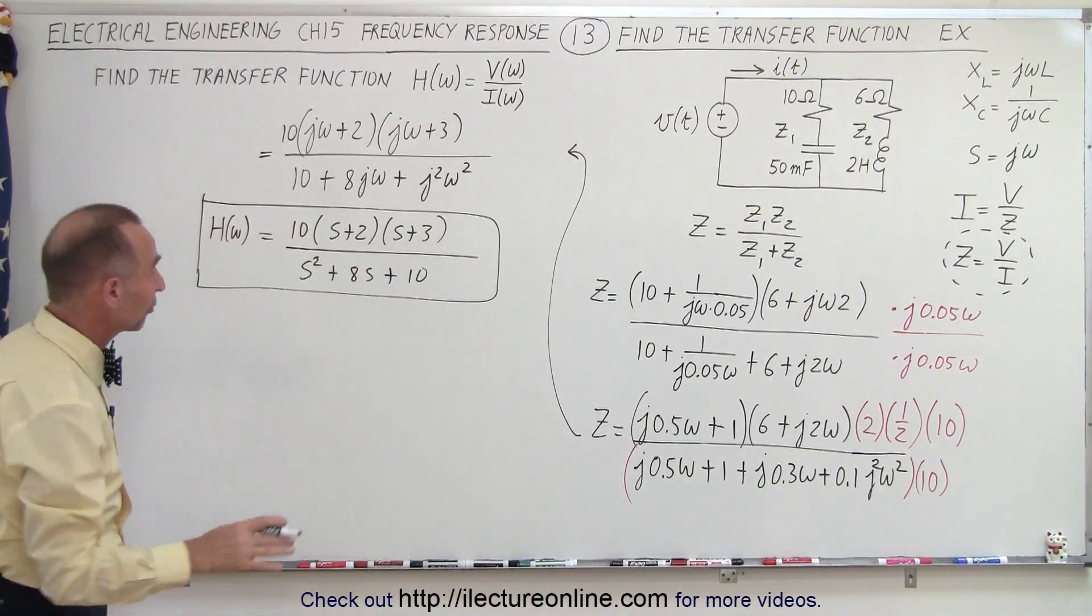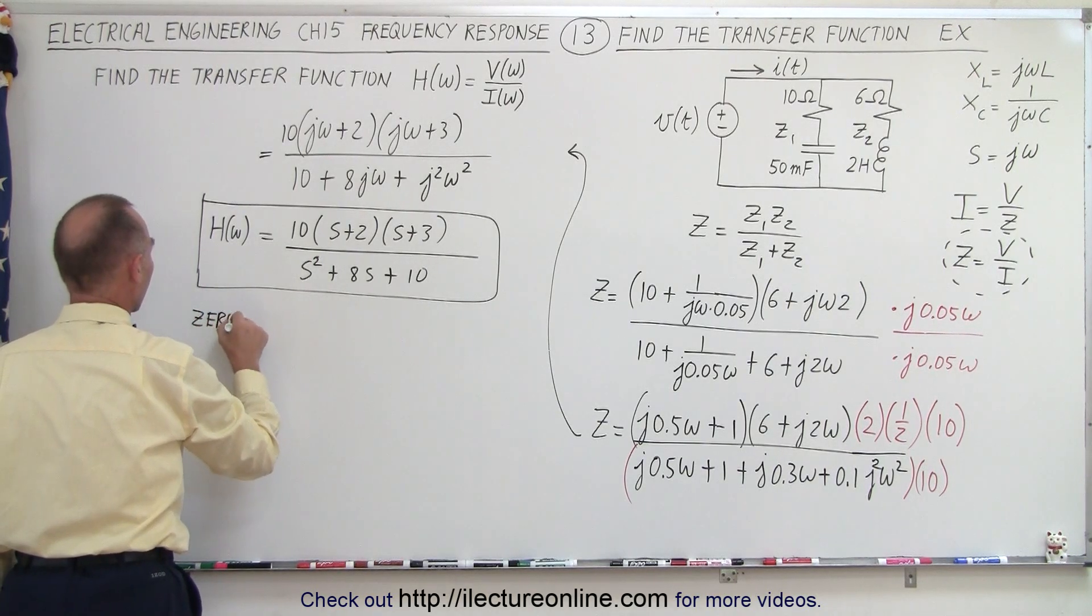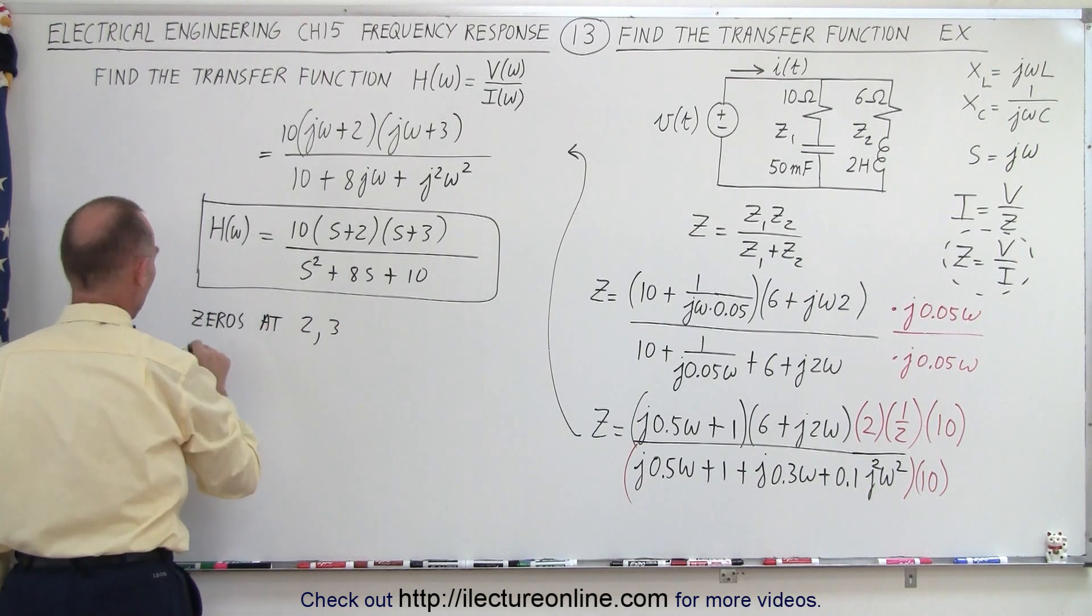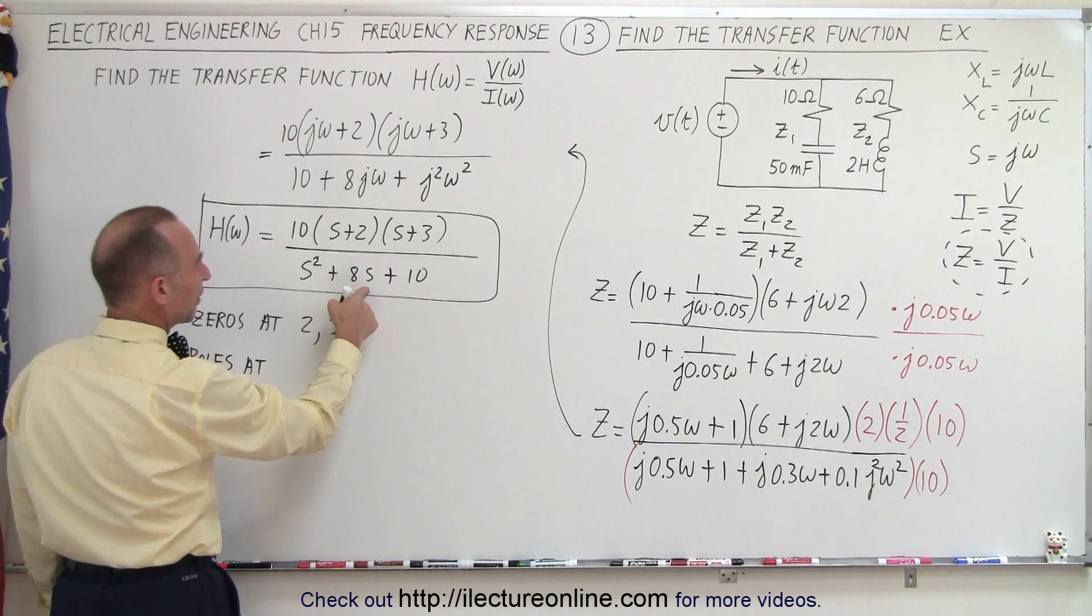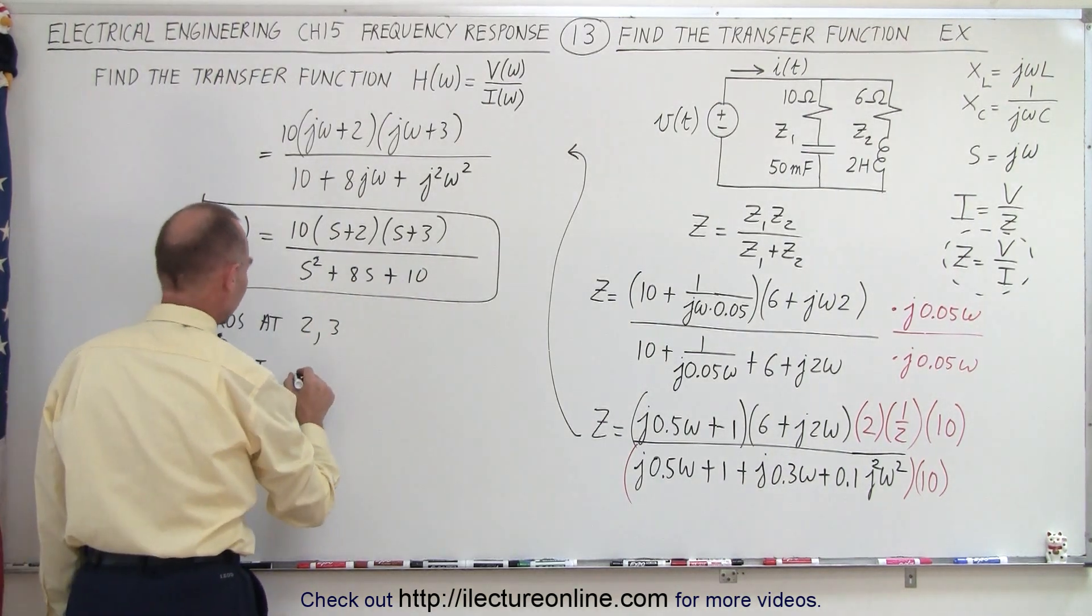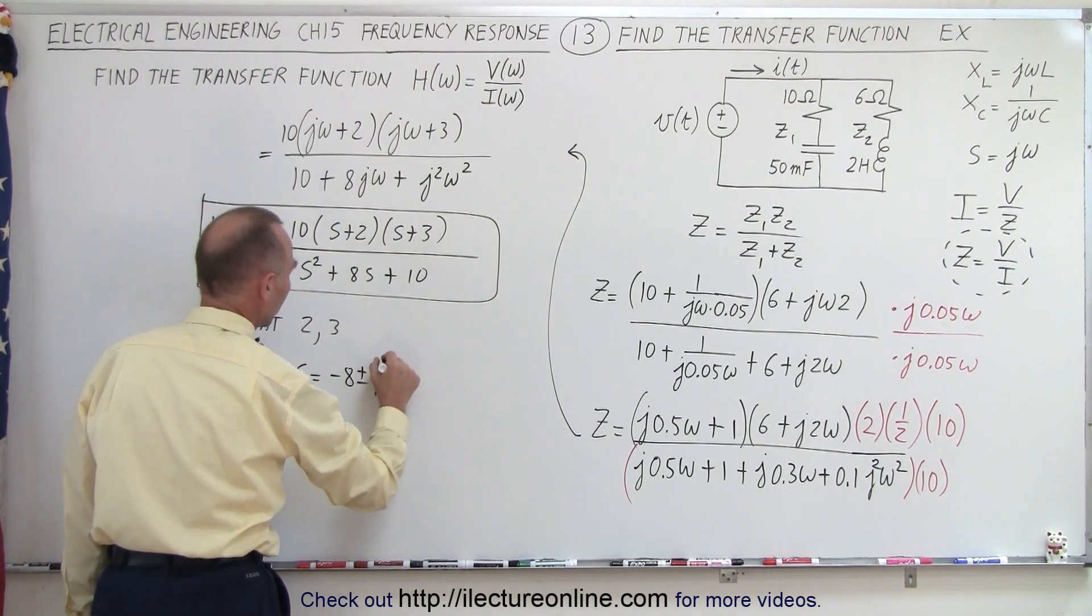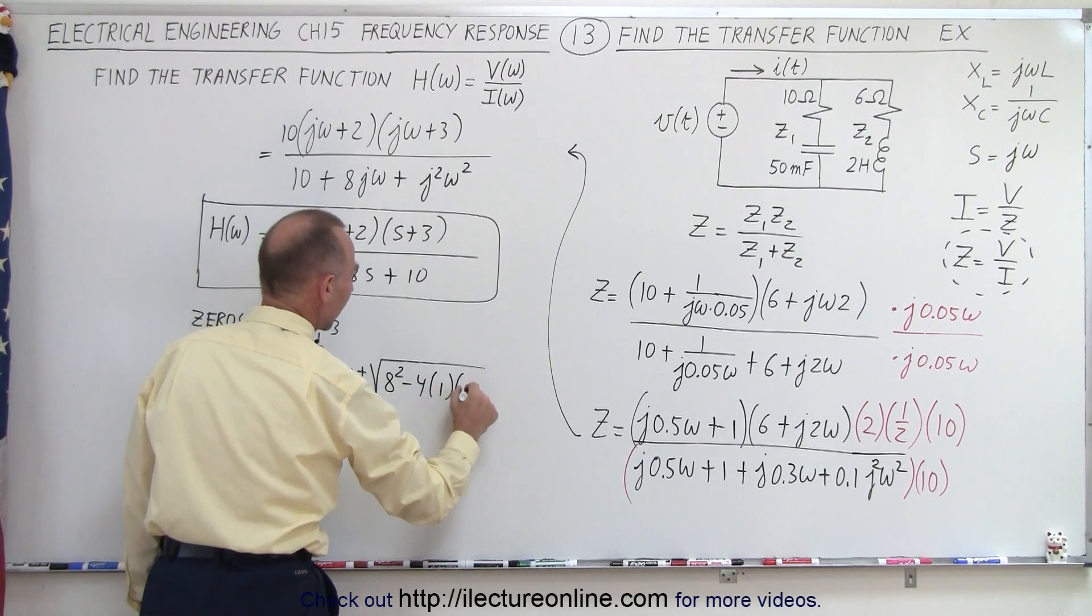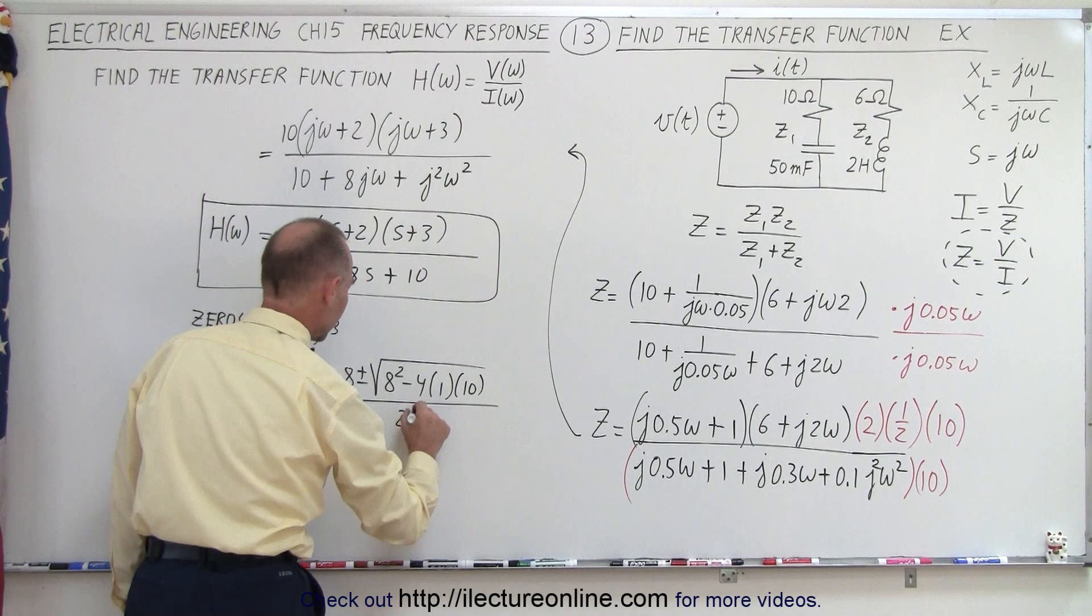Now, obviously, the zeros can easily be found. So, we have zeros at 2 and 3. And we have poles at, and I don't think we can factor this, because that's 2 times 5, so I won't factor. But we can say that S is equal to minus 8 plus or minus the square root of 8 squared minus 4 times A times C, all divided by 2 times A, 2 times 1.